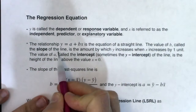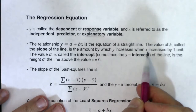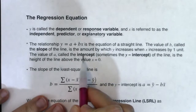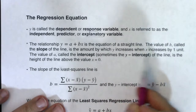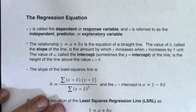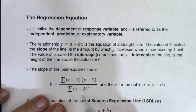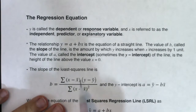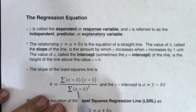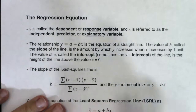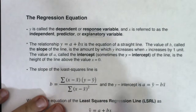The value of b, called the slope of the line, is the amount by which y increases when x increases by one unit. The value a, called the intercept — or the y-intercept in math — is the height of the line above x equals zero. We could find slope by multiplying deviations of x and y, summing them, and dividing by the sum of squared x deviations. Once you have b, you find a with the formula y-bar minus b times x-bar. That's a lot of calculation.